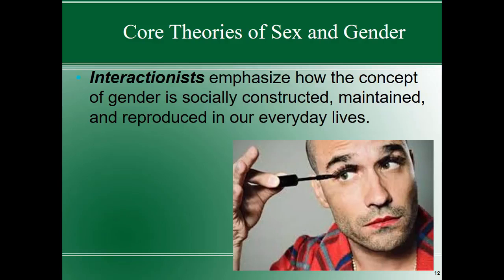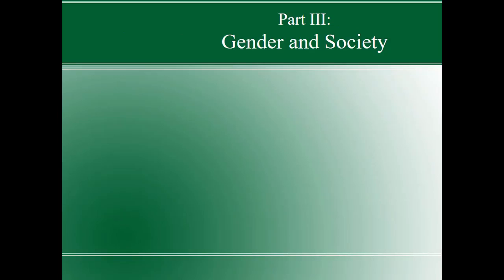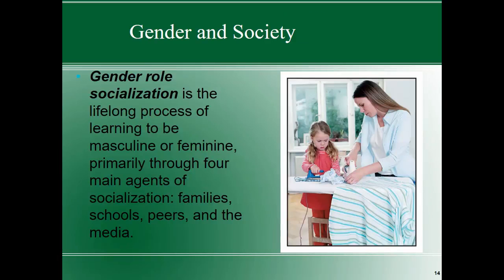For example, a man who has pronounced scruff, wears lipstick, and applies mascara presents a collection of symbols that don't match our traditional expectations — these are the symbols interactionists would examine. Gender role socialization is a lifelong process of learning to be masculine or feminine through our four main agents of socialization: family, schools, peers, and the media.